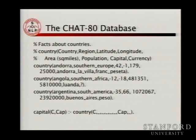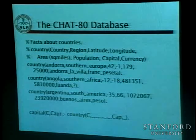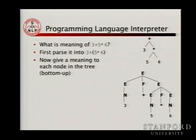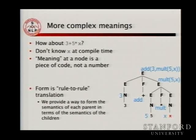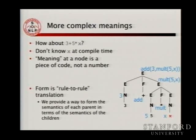The easiest case is where we have constants and we can evaluate at compile time, working out that the meaning is 33 and putting 33 into our system. The more typical case is when we write an arithmetic expression like 3 plus 5 times x. We still have semantic attachments off our syntax rules telling us how to work out the value of the whole thing. The meaning of a node can't be a fully evaluated answer; instead it has to be a little piece of code that will tell us how to calculate the answer.